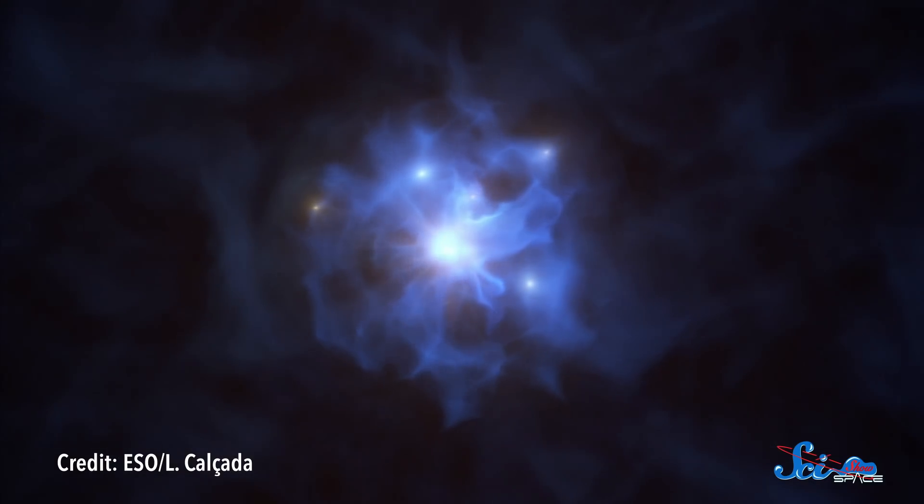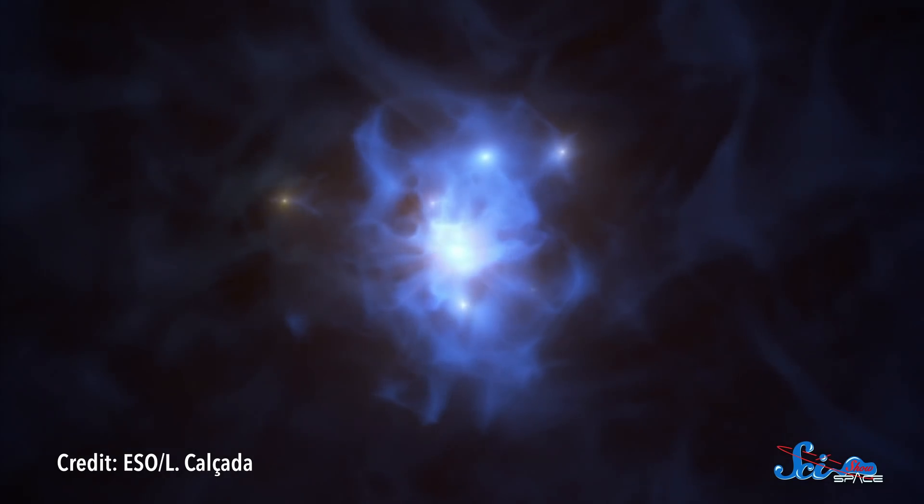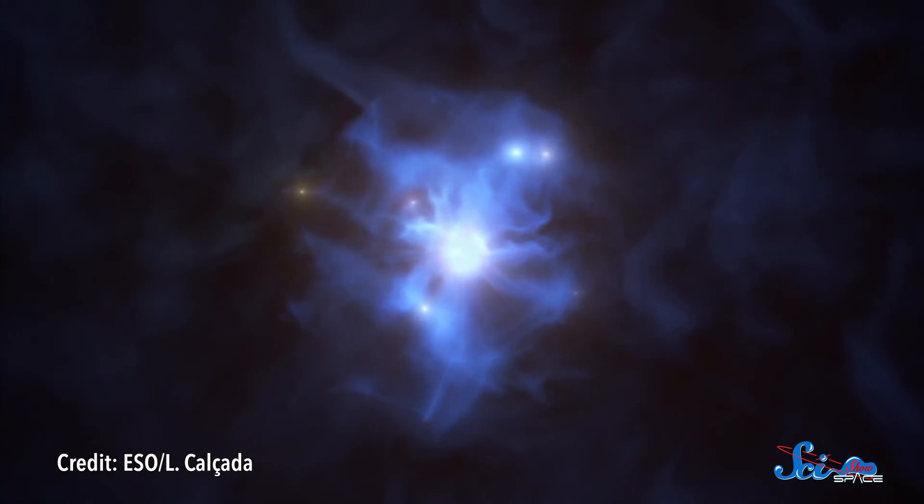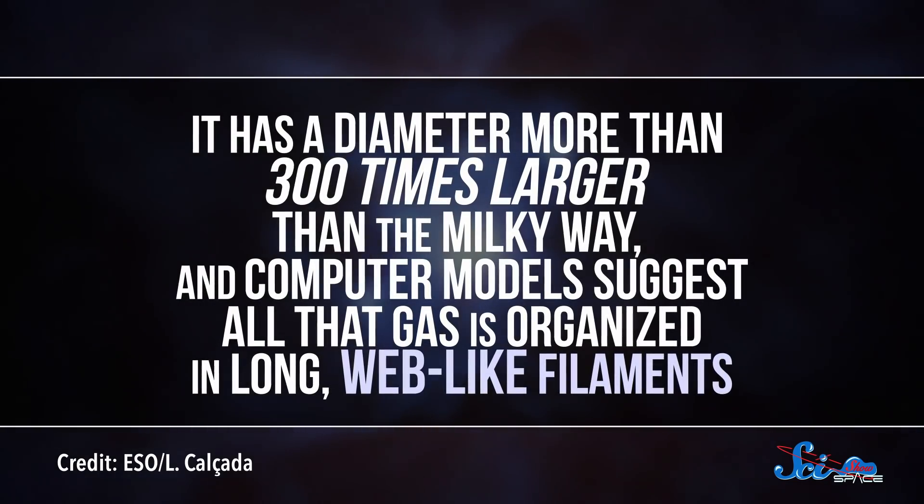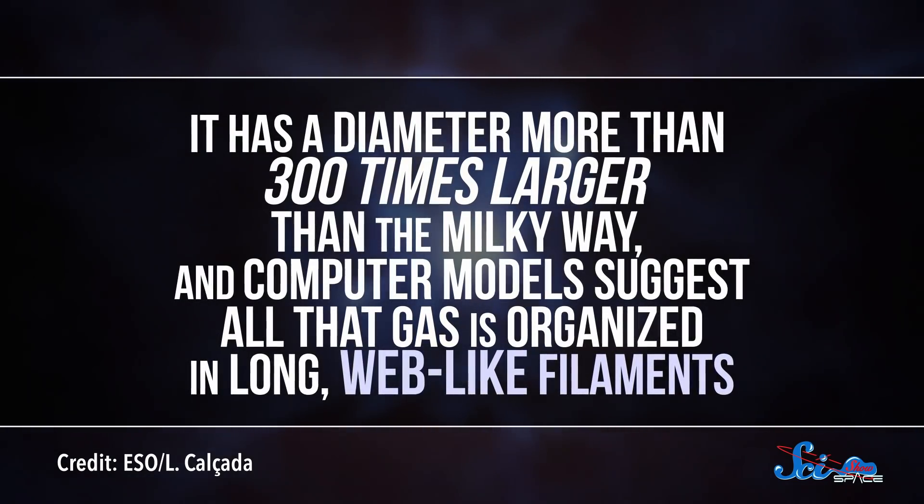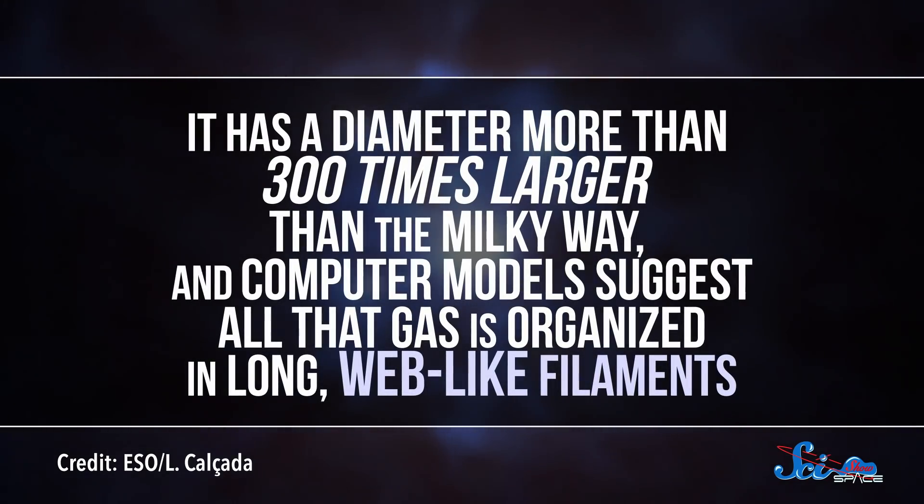See, the supermassive black hole they studied isn't just surrounded by six galaxies. And these galaxies are embedded in an enormous region dense with gas. It has a diameter more than 300 times larger than the Milky Way, and computer models suggest all that gas is organized in long, web-like filaments.